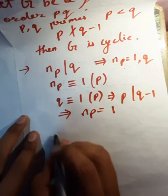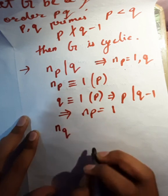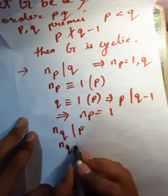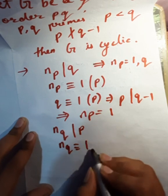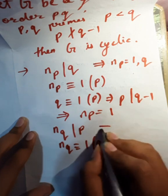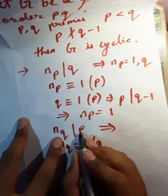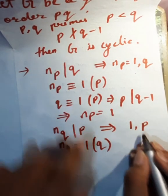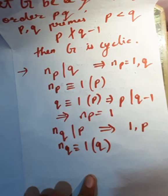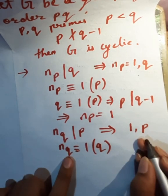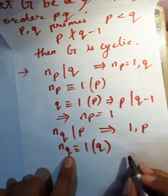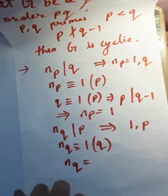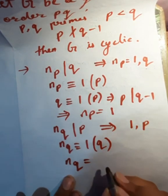Similarly, n_q divides p and n_q is congruent to 1 mod q. This implies n_q is either 1 or p, but since p is less than q, p cannot be congruent to 1 mod q. Therefore, we have n_q equal to 1.